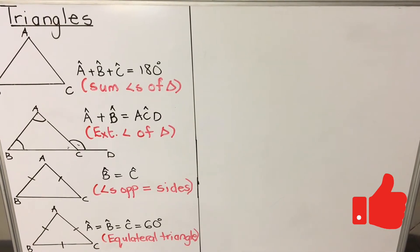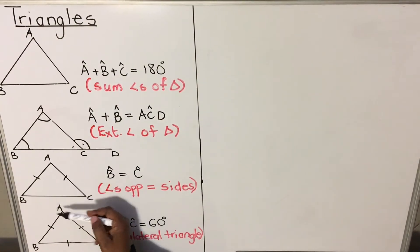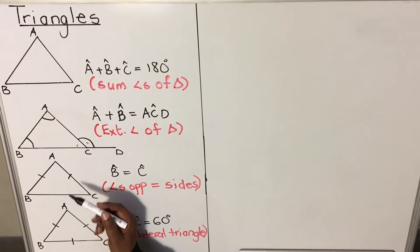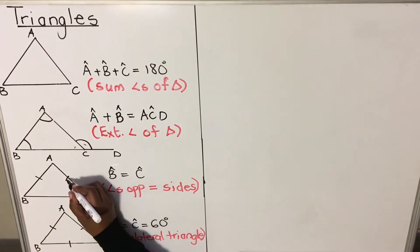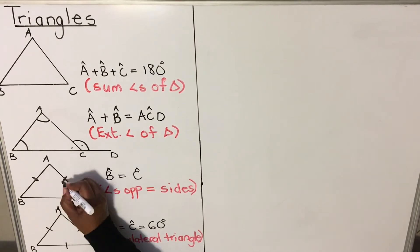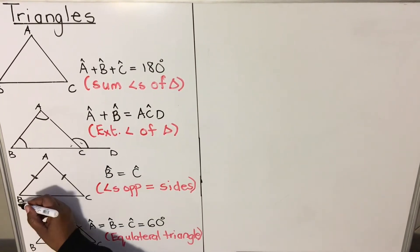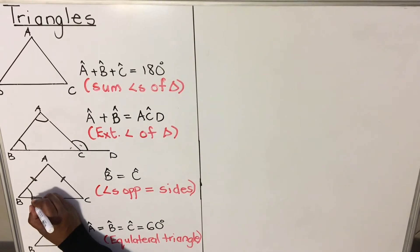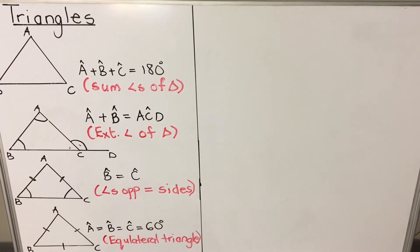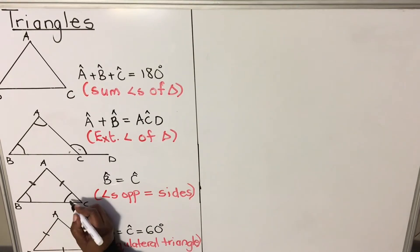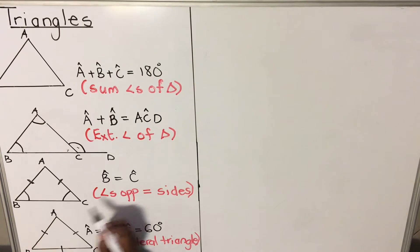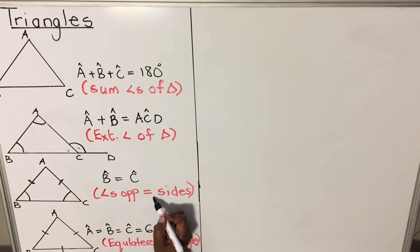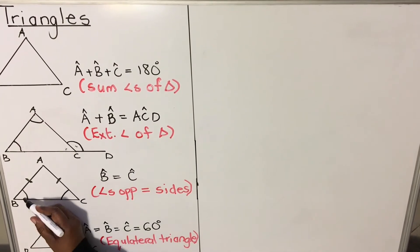The next property involves a special triangle called an isosceles triangle. That is a triangle where two sides are equal — when they are marked like this, they are telling you these sides are equal: side AB equals side AC. If you have two equal sides, the angles at the bottom of the equal sides are also equal. They are called the base angles. So angle B equals angle C, and the reason you write is: angles opposite equal sides.